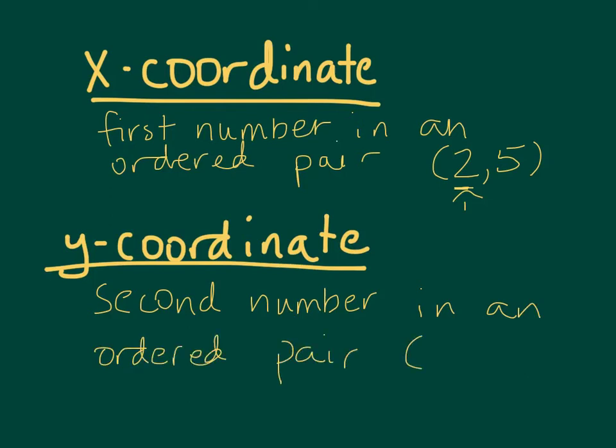If I have negative 3, 4, then 4 is my y coordinate. Remember that our coordinates are always x comma y. So those are always the two values.